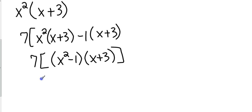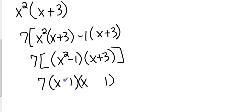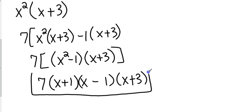So now we have 7 times the factored form of x squared minus 1: take the square root of x squared, take the square root of 1, and apply plus and minus, giving (x plus 1)(x minus 1). Then carry the (x plus 3) at the end. The final answer is 7 times (x plus 1)(x minus 1)(x plus 3) — quite possibly the problem on the worksheet that has a little bit of everything. That's about eleven minutes — see you tomorrow.